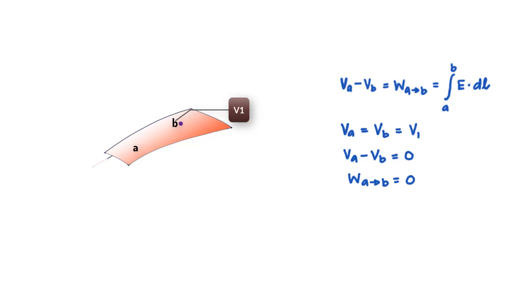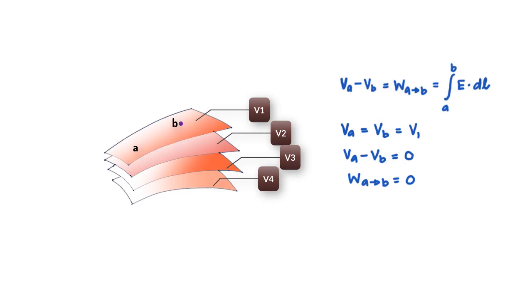And here is a setup where you have a bunch of equipotential surfaces, so that all points on this surface are at some potential, say V1, and potential of all points on this surface is also the same, say V2, and so on for other surfaces as well.